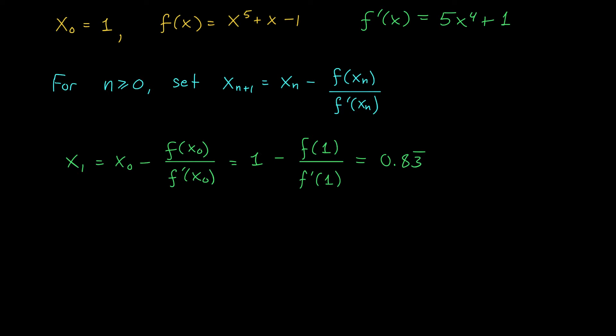Now, here, you are more than welcome to use a calculator. We compute our second term x2 as x1 minus f of x1 divided by f prime of x1. That should give us a value of approximately 0.764382.